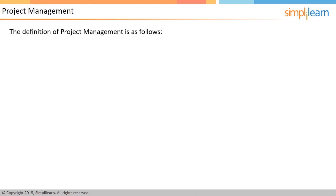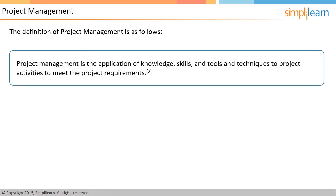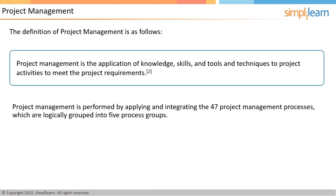As defined in the PMBOK guide, project management is the application of knowledge, skills, and tools and techniques applied to project activities to meet the project requirements. Project management is achieved by proper application and integration of the 47 processes. Application and integration means these processes should be executed in the right manner as well as in the right order.